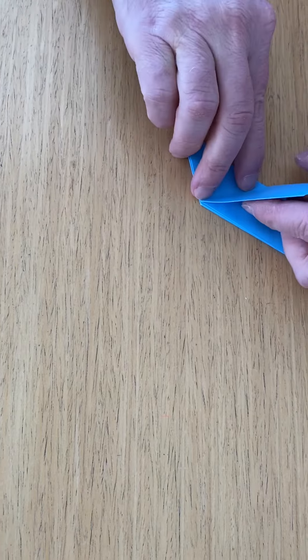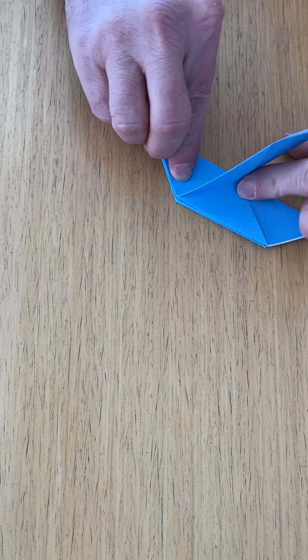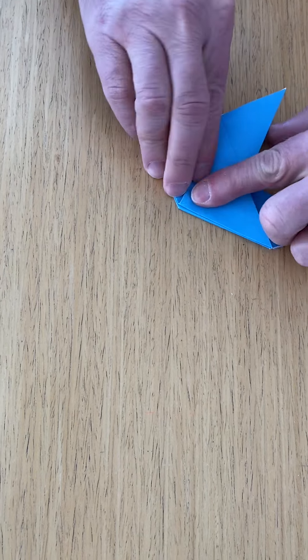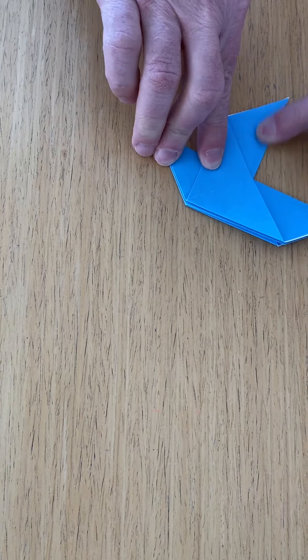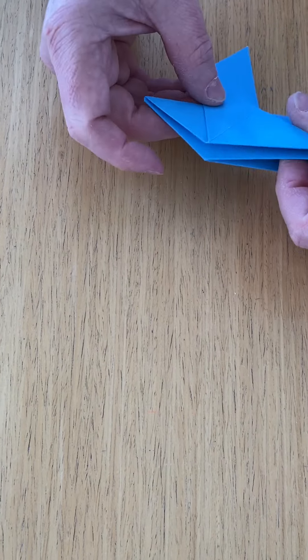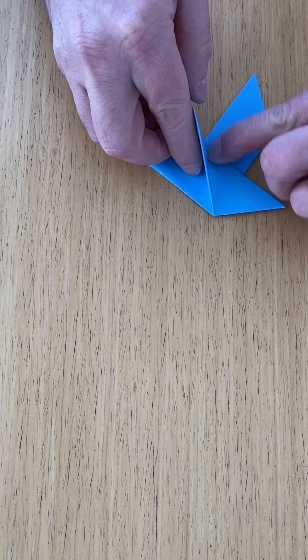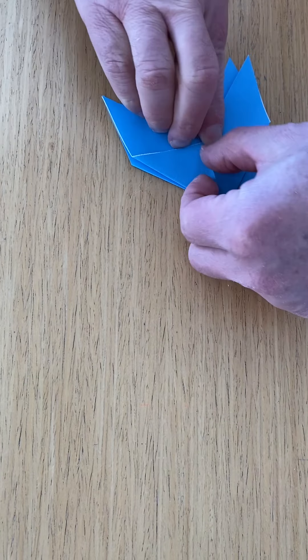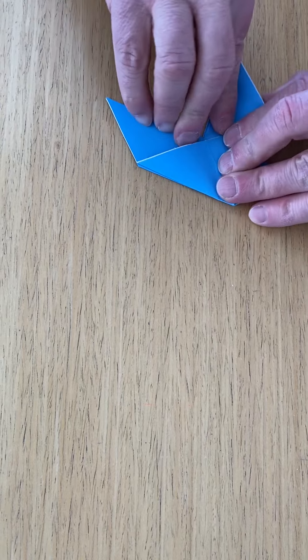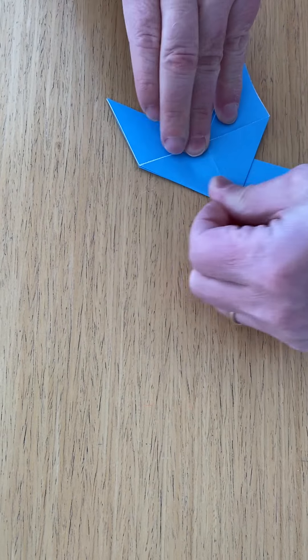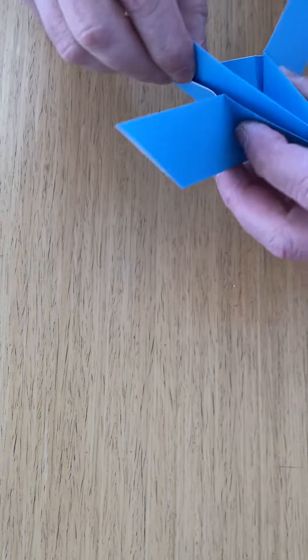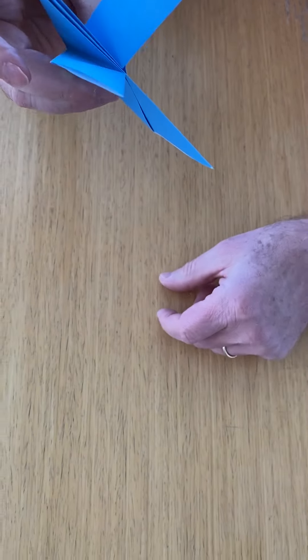Now, after that, it's a matter of taking this existing edge right here and folding the wing up there. And then we turn it over and we find that crease right there. And there's our two wings.